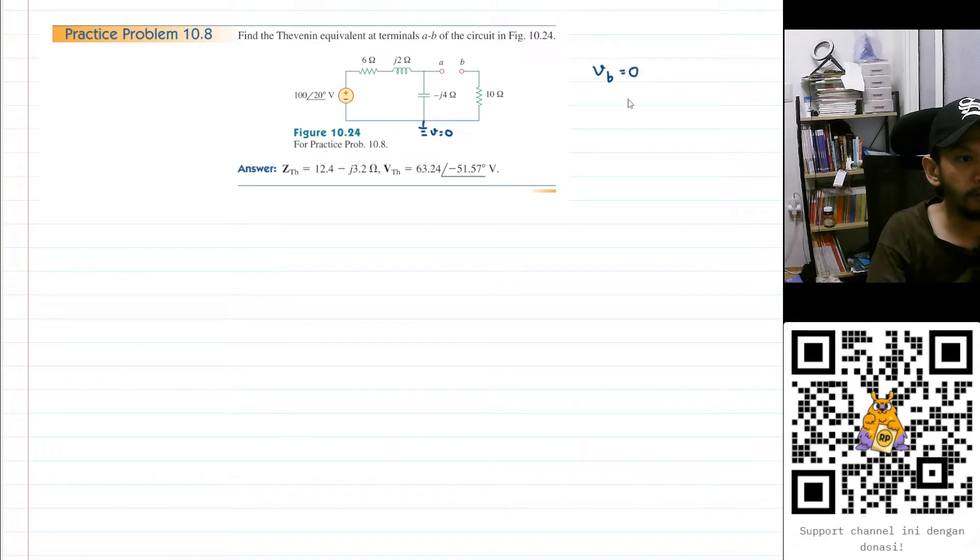Now we need to find out V between A and B, because that is the open circuit voltage that is equal to the Thevenin voltage. But now we know that VB is zero, we just need to find out VA.